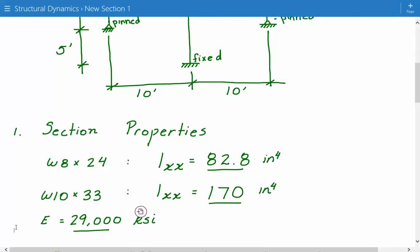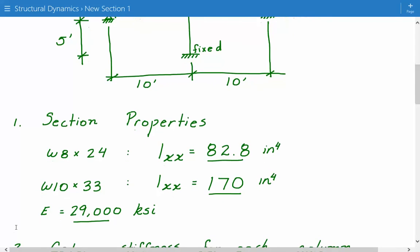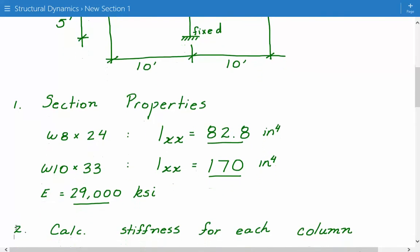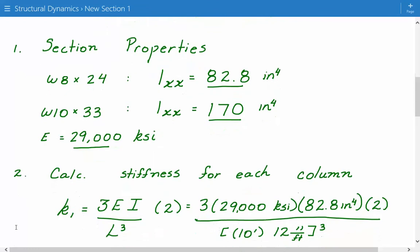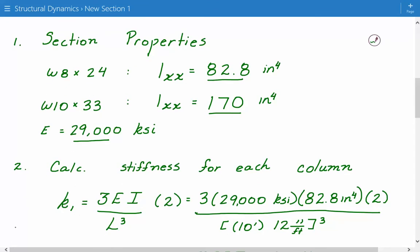Next, we'll calculate the individual transverse stiffnesses for each column type. So first, we'll consider the W8 by 24 columns. And so the transverse stiffness term for a pinned column, such as the W8 by 24, is 3 times EI divided by L cubed. And then we multiply by 2 since there are two columns that are W8 by 24.